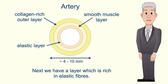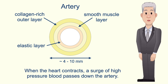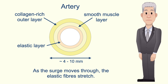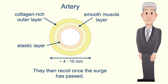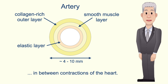Next we have a layer rich in elastic fibers. Elastic fibers contain the protein elastin, which can stretch. When the heart contracts, a surge of high pressure blood passes down the artery, causing the elastic fibers to stretch. They then recoil once the surge has passed. This elastic recoil helps to keep the blood moving smoothly forward in between contractions of the heart.